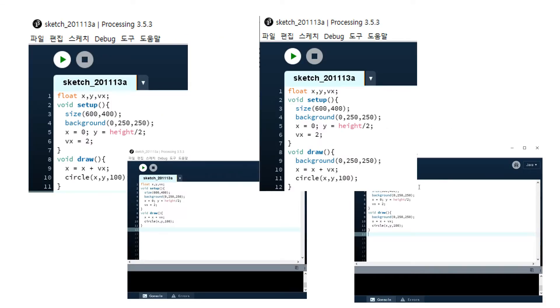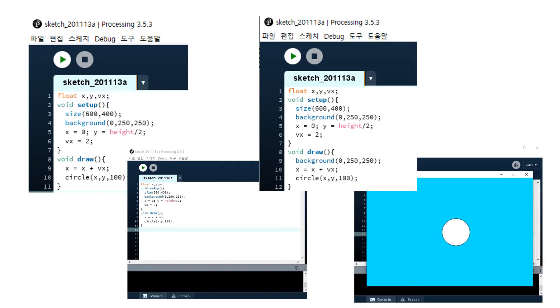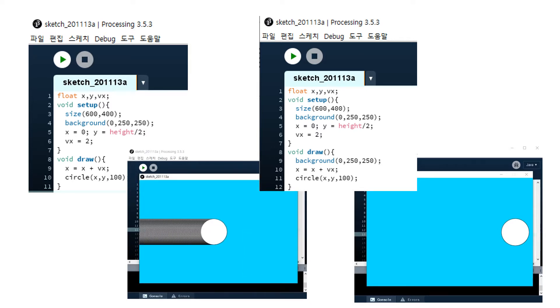Movement is realized by erasing the screen every 60th of a second and painting again. Let's look at this program here. This draw function draws a circle every 60th of a second. The x coordinate is updated every time at the location of the circle. Thus, the circle appears to be moving. Let's try. The circle is moving.